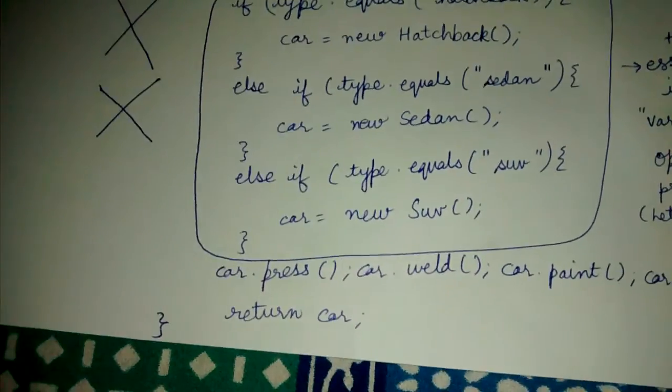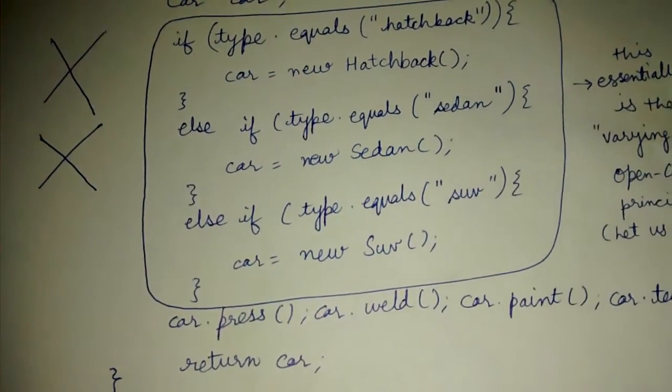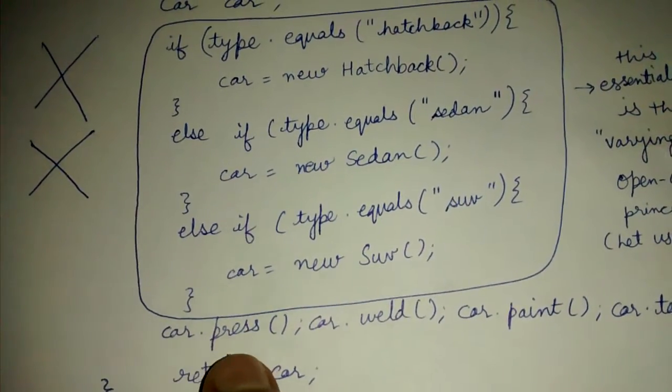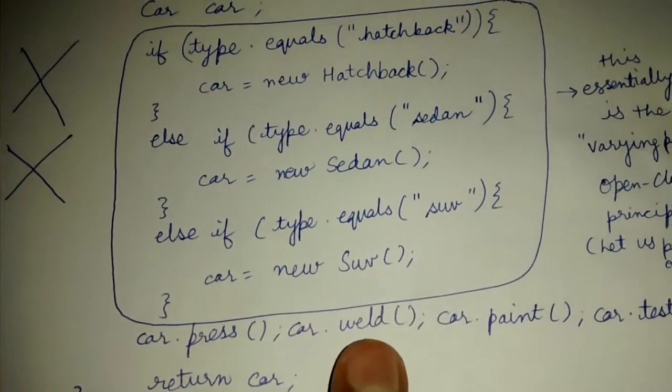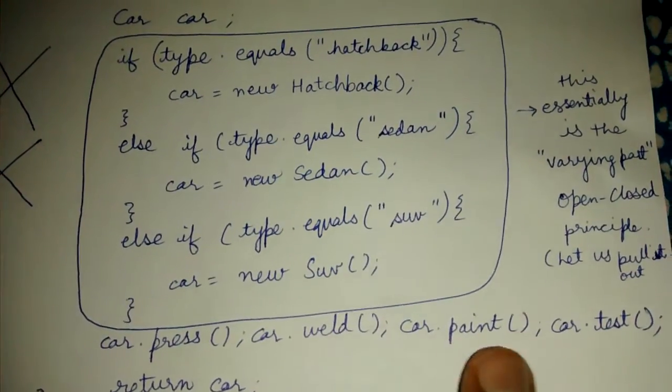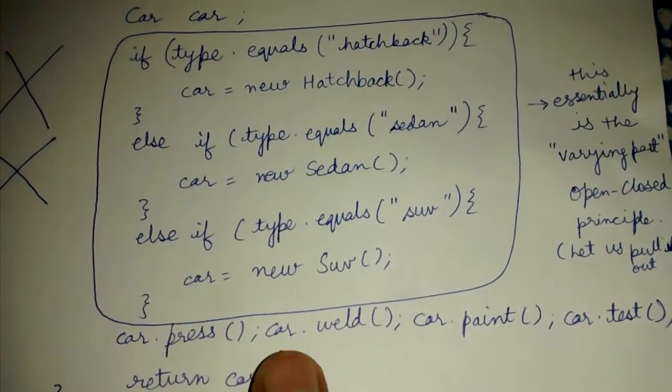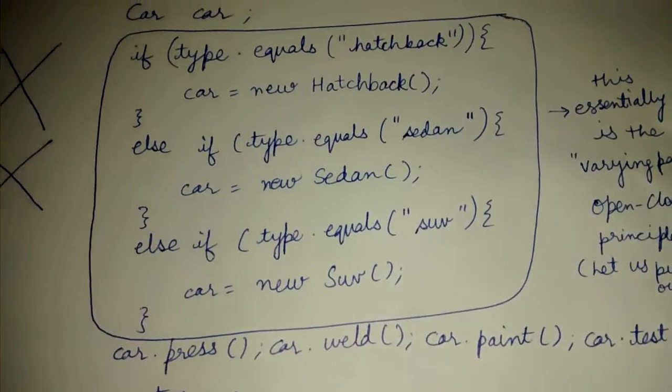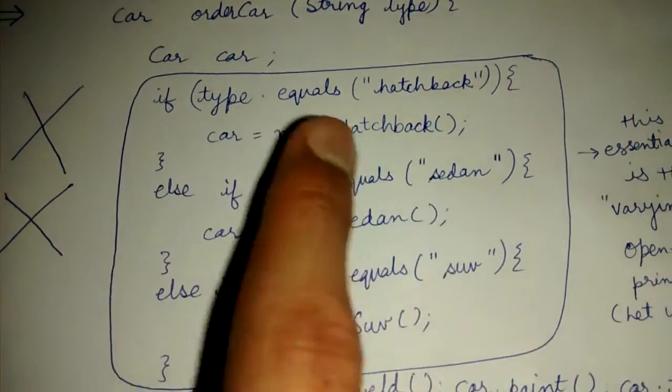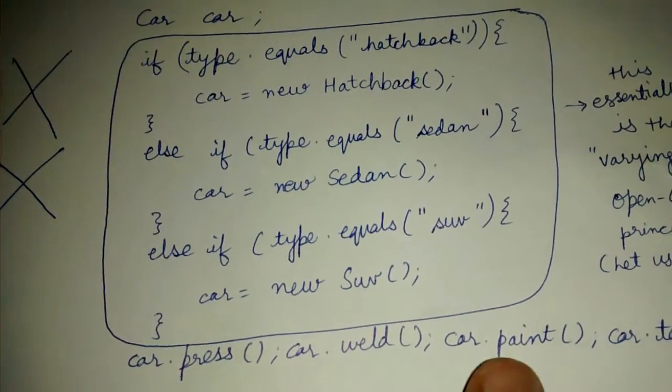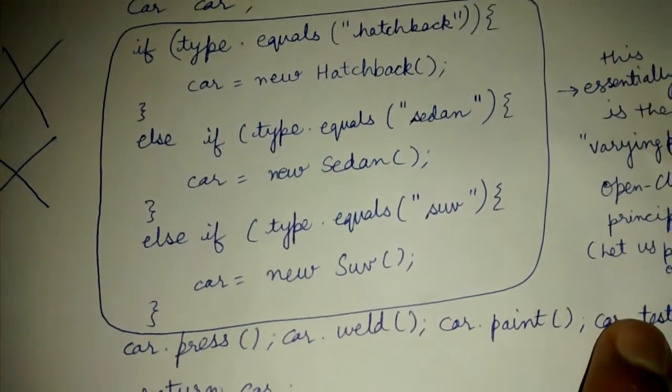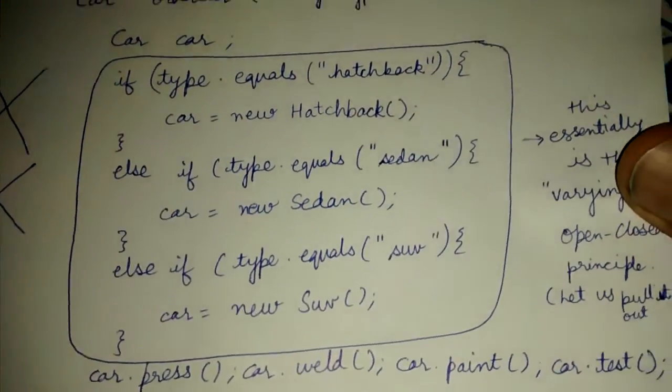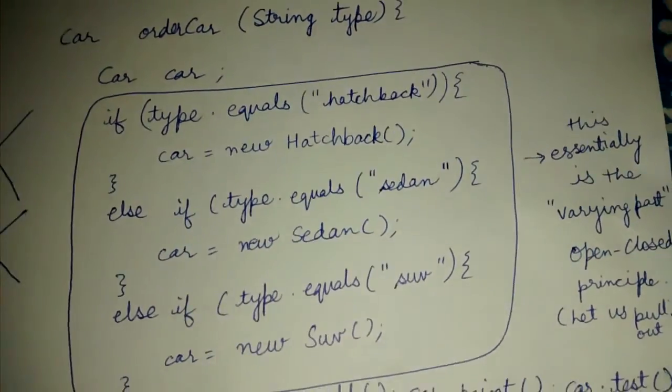Here is our car reference to which we are assigning the object. After the object is created, we call car.press, car.weld, car.paint, and car.test. These are the typical steps in a car workshop. When we order a car, first a new car will be created, then these steps will be performed on that car, and finally we return that car object.